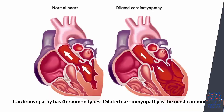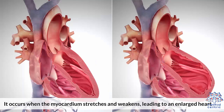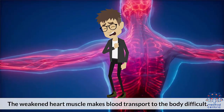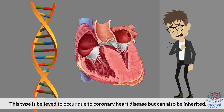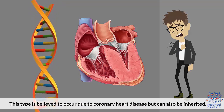Types. Cardiomyopathy has four common types. One: dilated cardiomyopathy is the most common. It occurs when the myocardium stretches and weakens, leading to an enlarged heart. The weakened heart muscle makes blood transport to the body difficult. This type is believed to occur due to coronary heart disease, but can also be inherited.